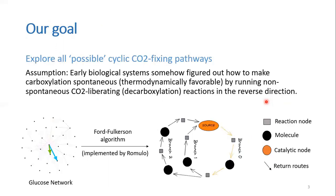Our goal was to find all energetically possible carbon-fixing autocatalytic cycles. The underlying assumption was that early biological systems somehow figured out how to make carboxylation spontaneous by running non-spontaneous CO2-liberating reactions in the reverse direction.